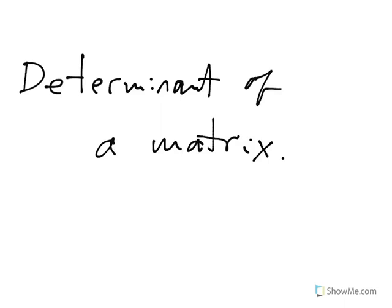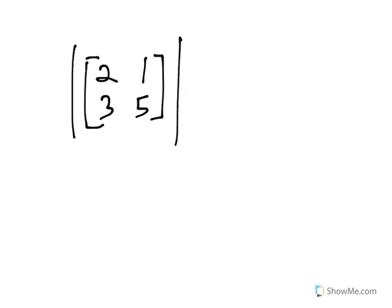Every square matrix has a number associated with it that's called the determinant. The notation looks almost like absolute value marks—it's not the absolute value, but it kind of looks like that. Sometimes they'll replace the square brackets with these vertical bars. And the determinant of a square matrix is going to be a number.